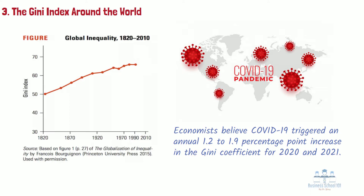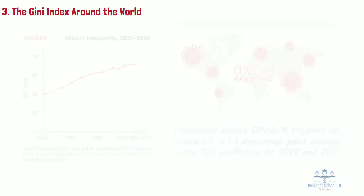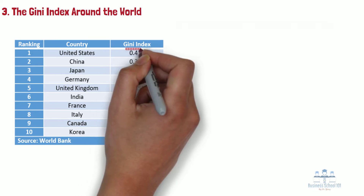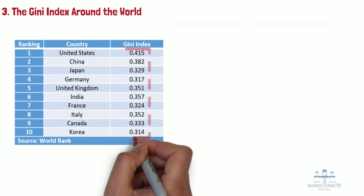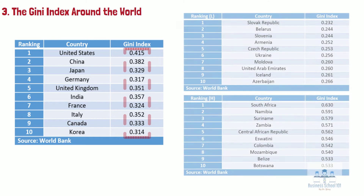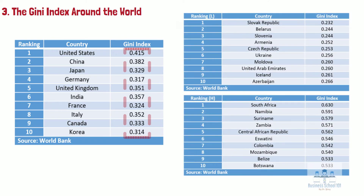To give you a better understanding, here is the Gini index of the world's 10 largest economies. As you can see, most of these countries' Gini coefficients range between 0.3 and 0.4. In addition, here are the top 10 countries with the highest and lowest Gini coefficients.